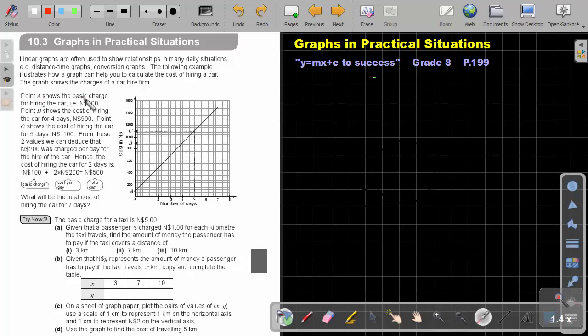Point A shows the basic charge for hiring the car. That will be exactly $100 Namibian. Point B shows the cost of hiring the car for 4 days. There is point B. That will be $900 Namibian, between $800 and $1,000. Point C shows the cost of hiring the car for 5 days. So for 5 days, that point will be $1,100 Namibian.